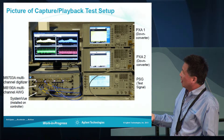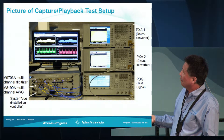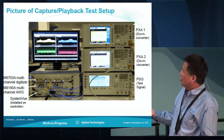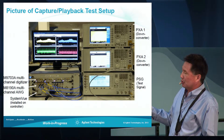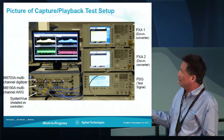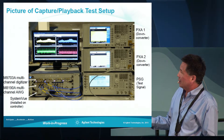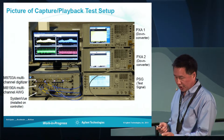There's a splitter here. The two splitter outputs go into two different PXAs, which are used for wideband down conversion so that we can digitize the IF with the digitizer.